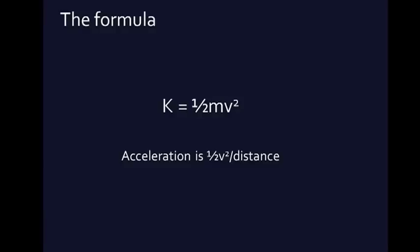The beginning distance is zero and the beginning velocity is zero, since we're talking about kinetic energy as the amount of energy to get something from zero to its current speed. So acceleration can be formulated as ½v² divided by the distance.